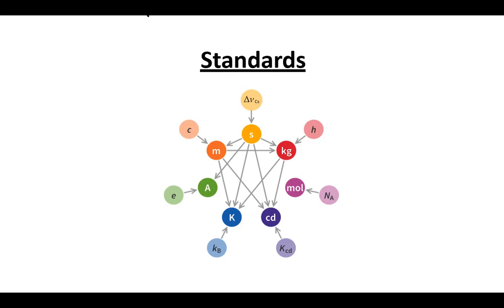What we're talking about today are those standards we mentioned last time. There used to be physical representations - a meter stick that was a meter long, and so forth. People were trying to standardize measurements, because something like a cubit - the length of your forearm to your fingertips - is different for everybody. That's not a great way to measure things, so at some point people decided we need to standardize all this stuff.